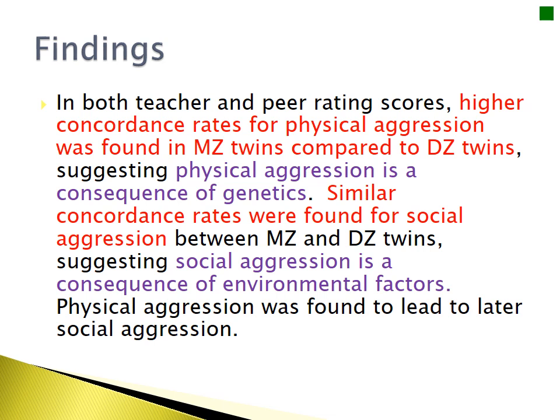The concordance rates found for social aggression were similar between the MZ and DZ twins. Because the concordance rate was similar, even though MZ twins share 100% of DNA and DZ twins only share 50%, this suggests that social aggression is a consequence of environmental factors. They also found that physical aggression would later be found to lead to social aggression.